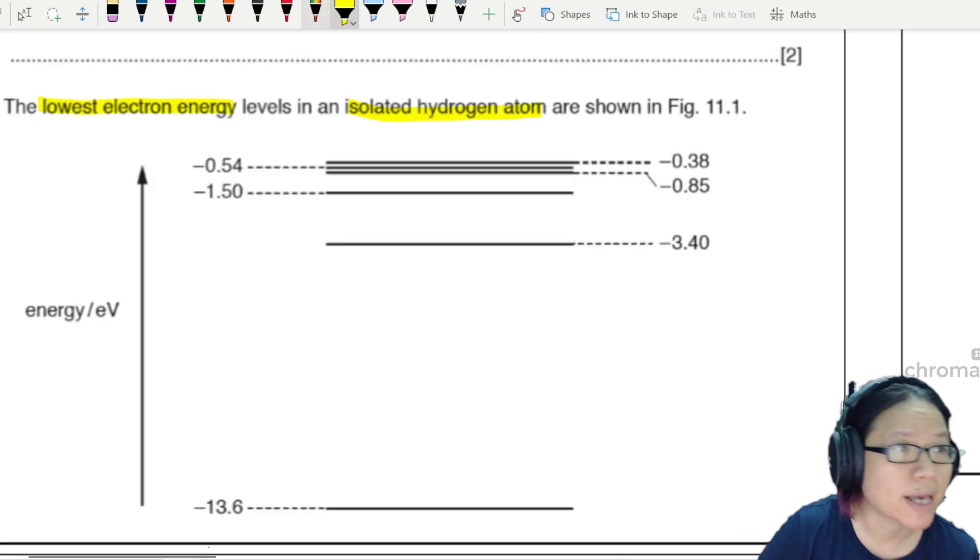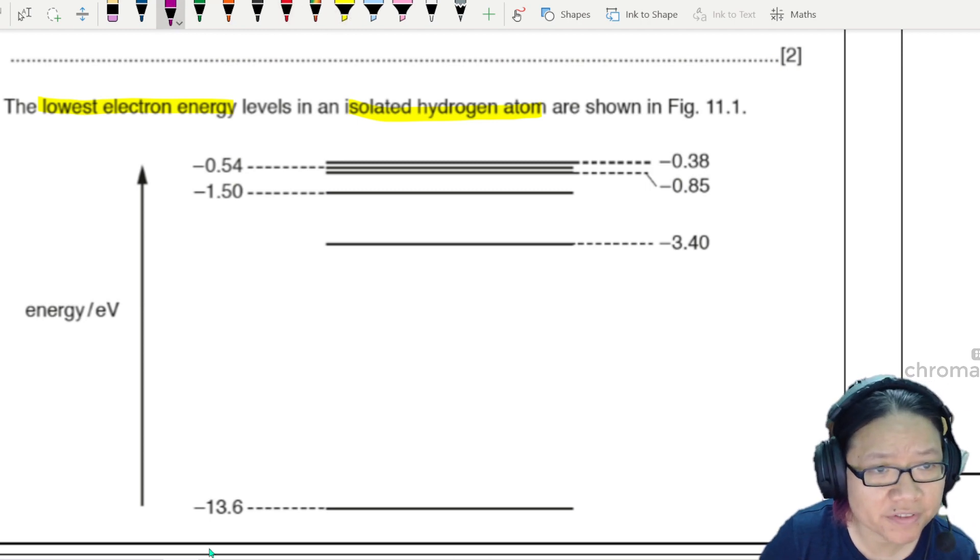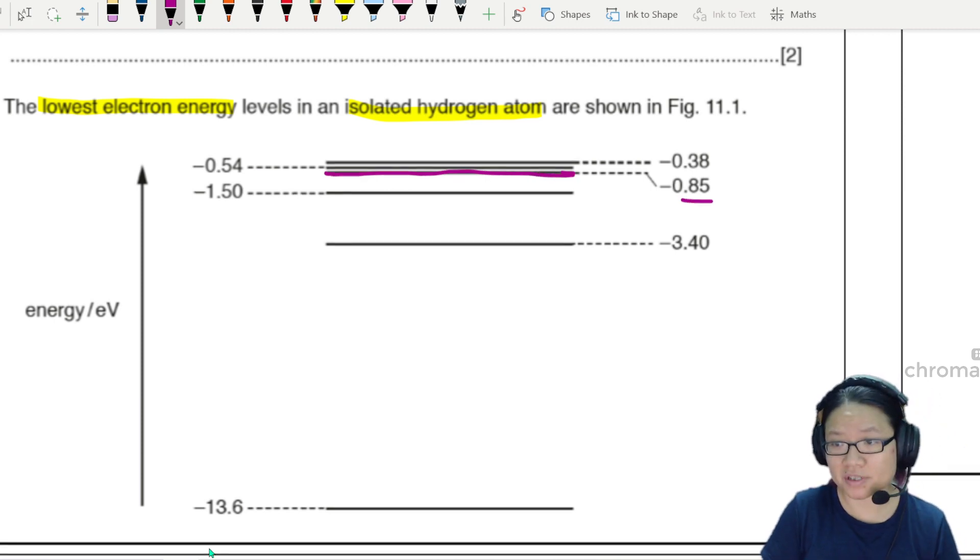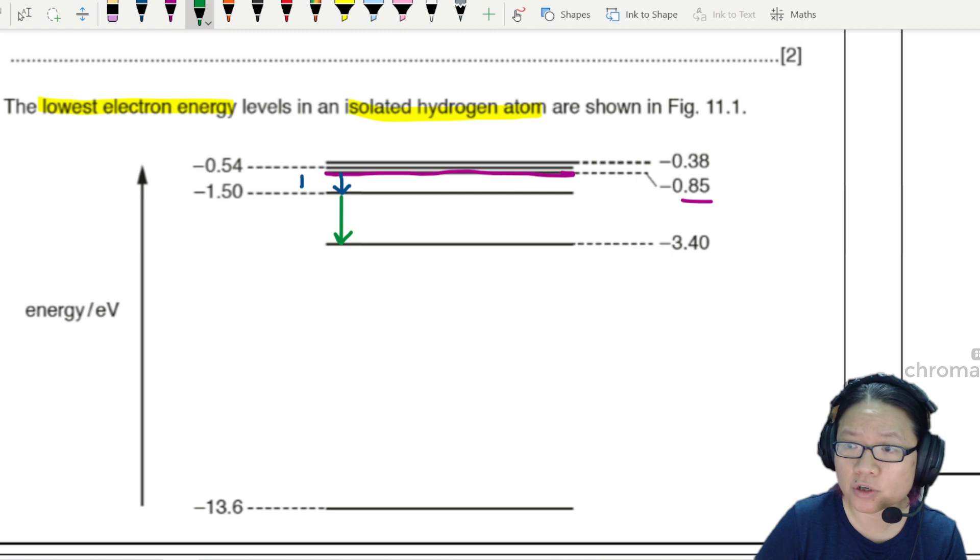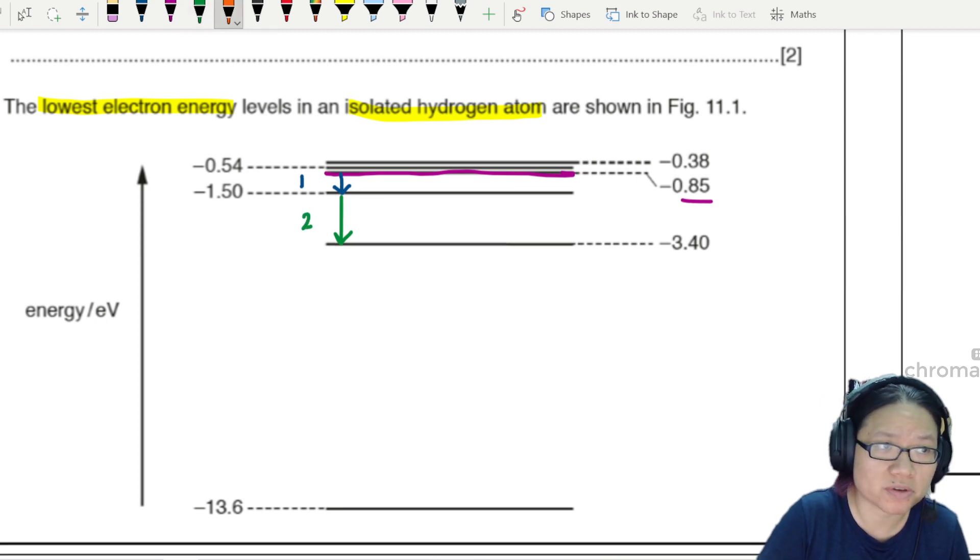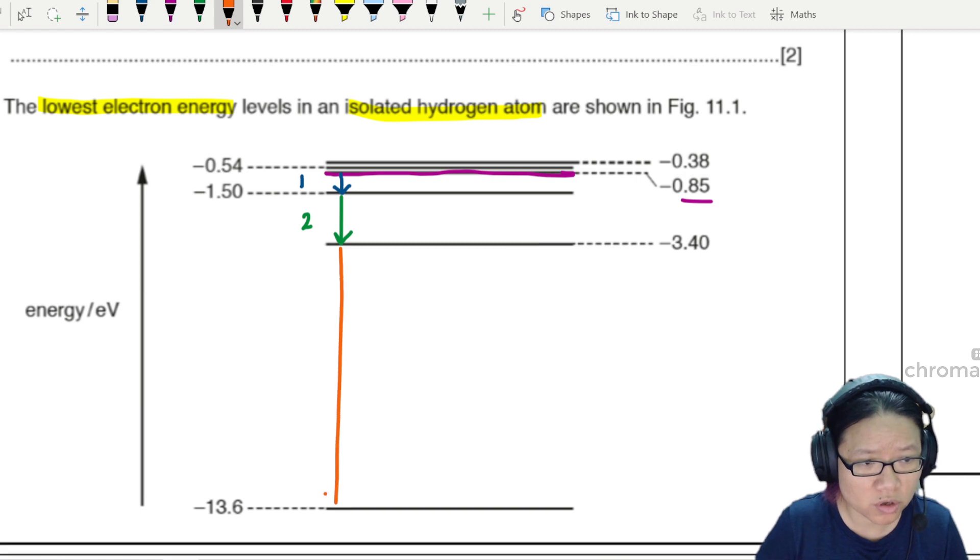Looking at the diagram, negative 0.85 is this line here - the purple line. What are the possible transitions? Let's do it step by step. The first transition is from negative 0.85 to negative 1.5, that's number one. Then we can continue from negative 1.5 to negative 3.40 - these are all possible wavelengths. Then negative 3.4 to negative 13.6, this is the third wavelength.